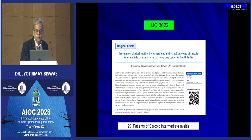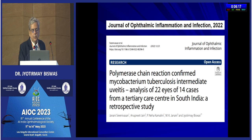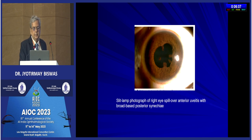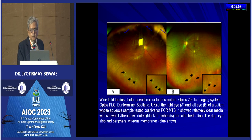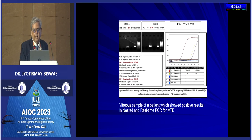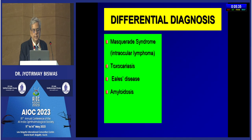We also published PCR-proven analysis of 14 cases where I did the AC tap where there was spillover anterior uveitis. This is an example of a 14-year-old girl who had broad posterior synechiae, vitreous exudates, and a lot of vitreous haze. This patient underwent diagnostic and therapeutic vitrectomy, and the vitreous specimen nested PCR and real-time PCR showed mycobacterium tuberculosis. The patient responded well with a course of anti-TB therapy and steroids.